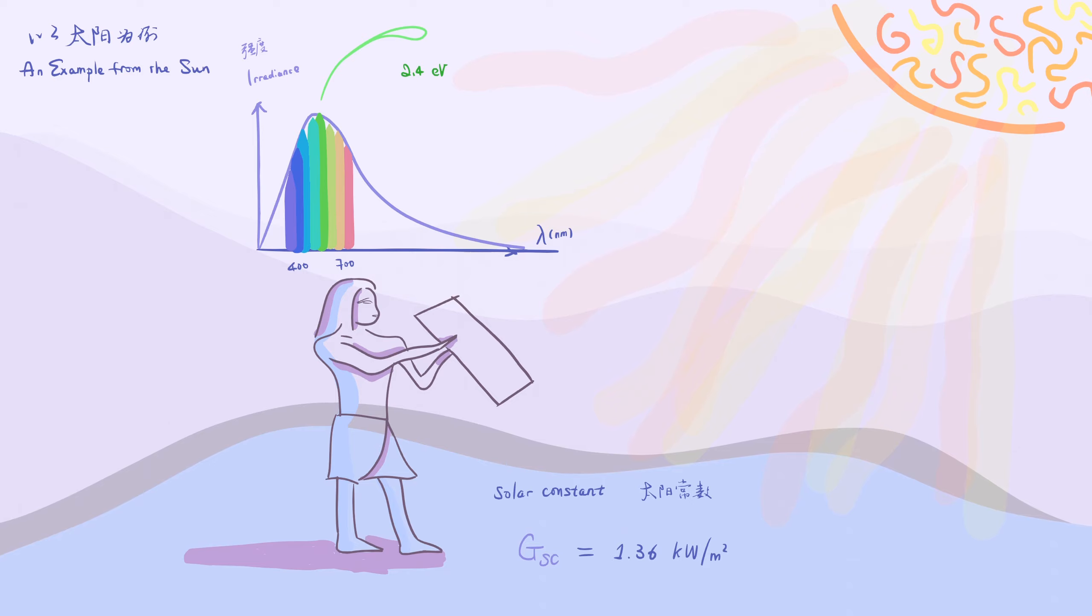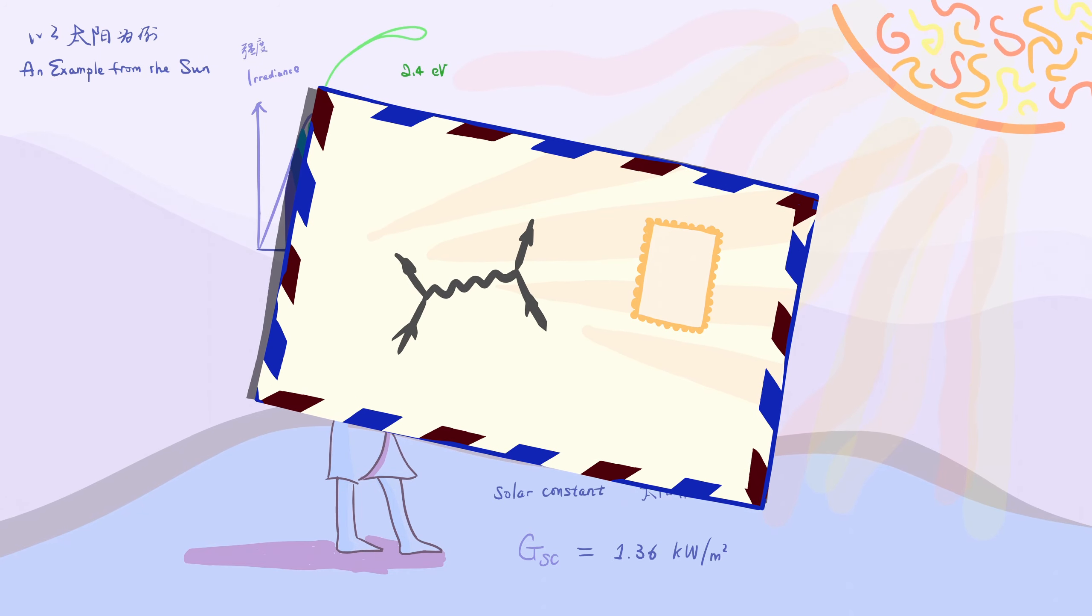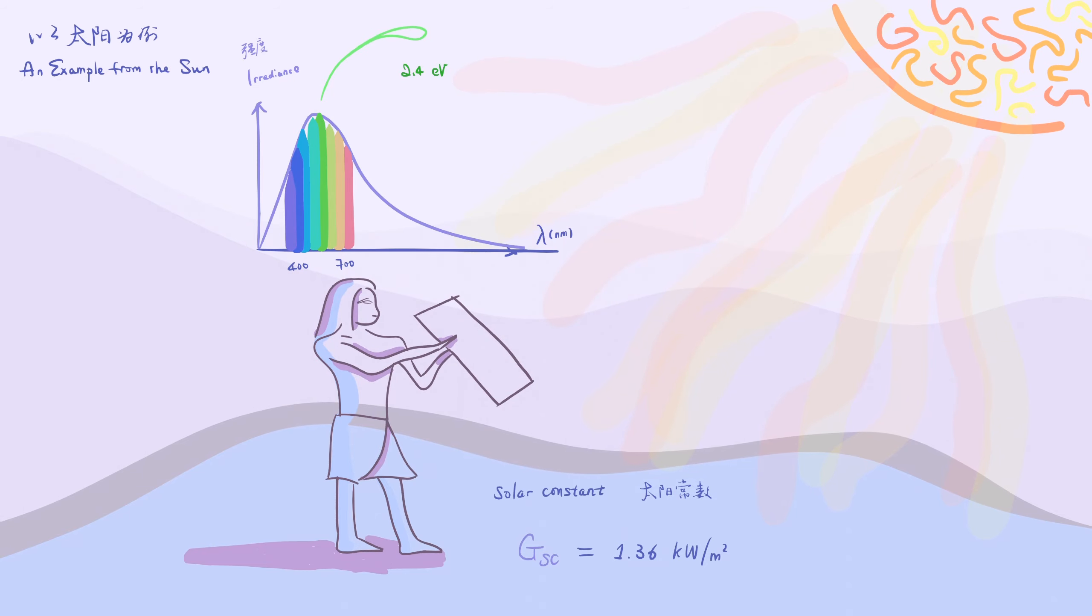A photon of 500 nanometer has energy of 2.4 electron volts. So with a back-of-envelope calculation, we get the mean number of photons from direct sunlight on a 1 square meter surface per second is 3.5 times 10 to the 21.